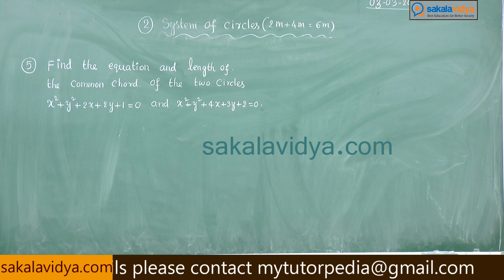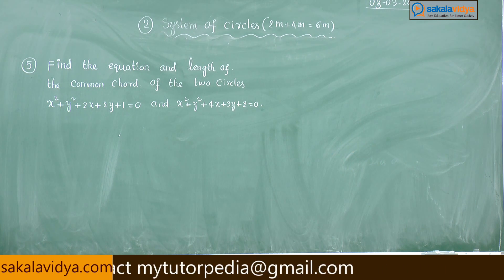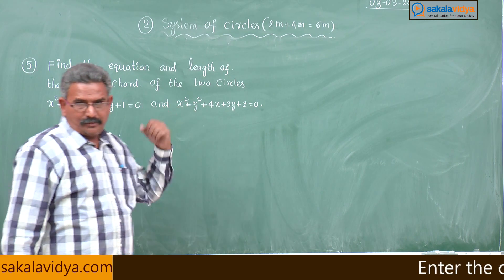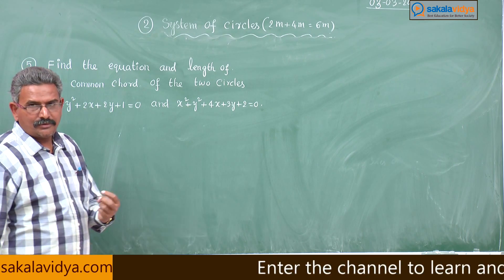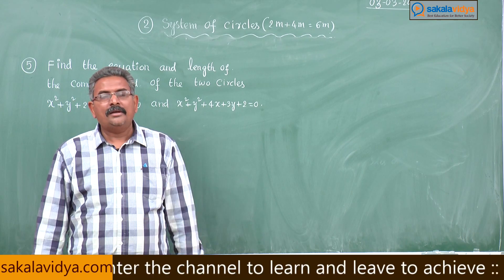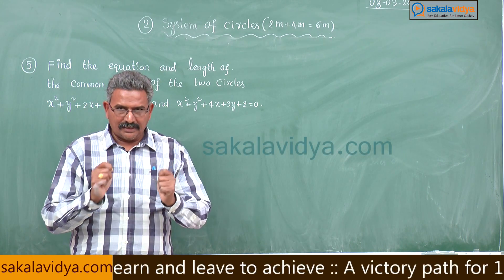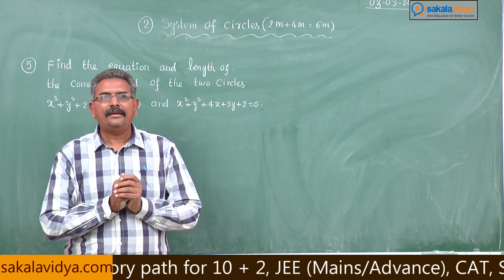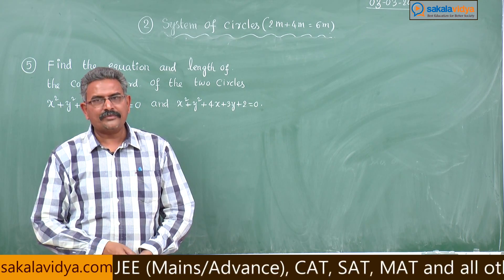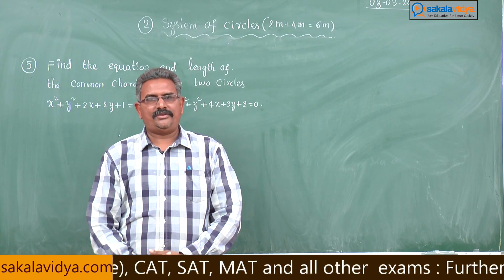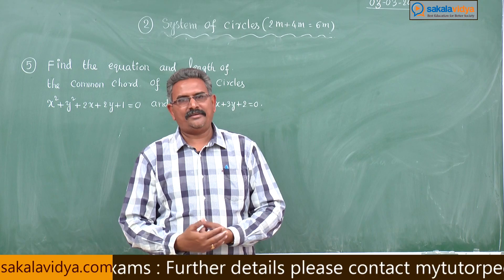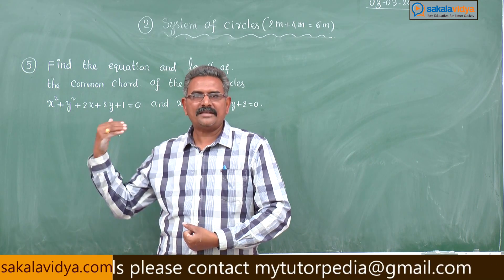First, read the problem. In this problem, equations of two circles are given. We have to find the equation of the common chord of both circles and the length of that common chord. The first equation of the circle is s = 0, the second is s' = 0. Then s minus s' = 0 gives us the equation of the common chord, as we discussed in previous episodes.